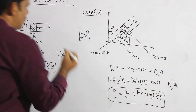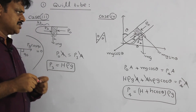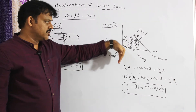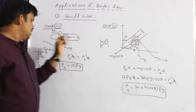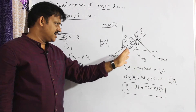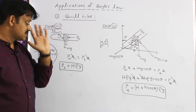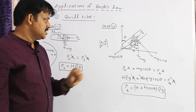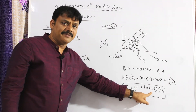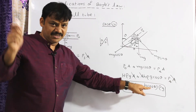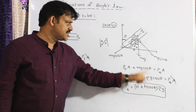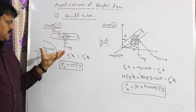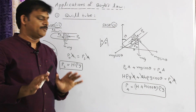Case 4 is the general case because all other cases follow from it. If θ = 0° (open end upward), cos 0 = 1, giving P = (H + h)·ρ·g — that is Case 1. If θ = 180° (open end downward), cos 180 = −1, giving P = (H − h)·ρ·g — that is Case 2. If θ = 90° (horizontal), cos 90 = 0, giving P = H·ρ·g — that is Case 3.